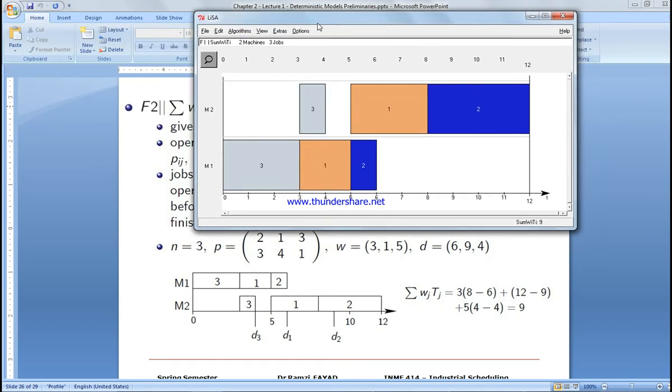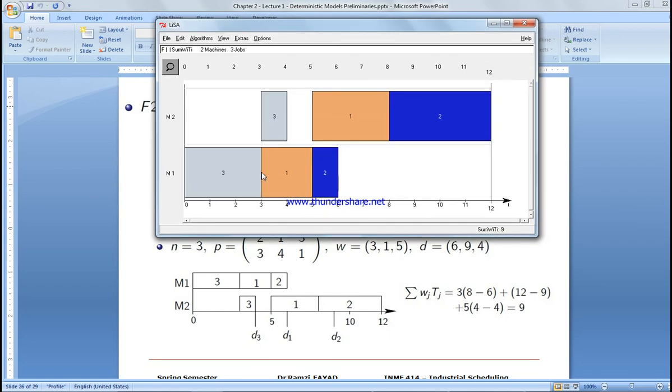Let's verify the solution is correct. As you can see here, machine one processes 3, 1, 2.